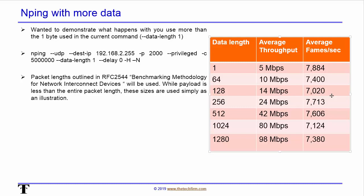This is Windows 8, so my machine, my operating system, my card, and this tool — that's the most I can get. The point of the exercise is to find out with your system and the tools you have, in this case nPing, how much you can generate. If I wanted a lot more traffic, I would have to change the data length. When I set 1280 bytes in the packet, I got all the way up to 98 megabits per second with the same frame rate.